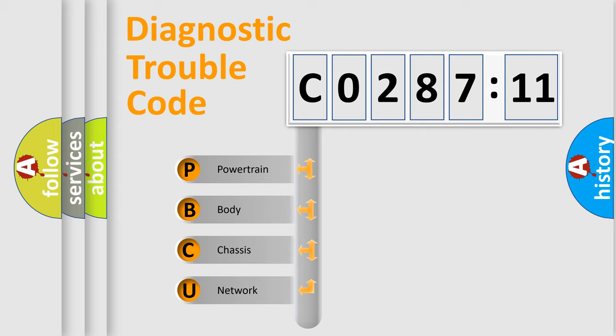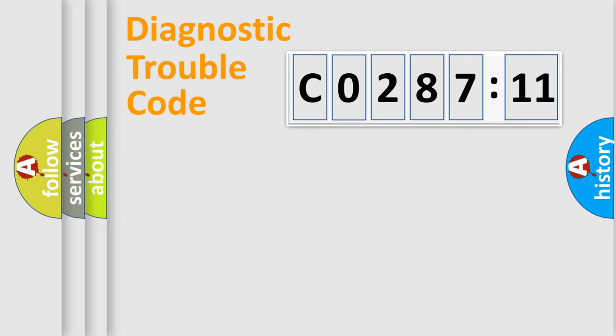We divide the electric system of automobile into four basic units: Powertrain, Body, Chassis, and Network.